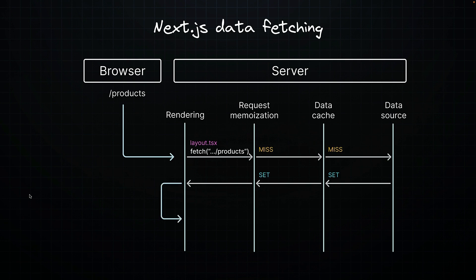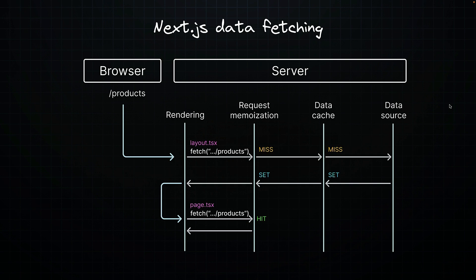When the layout renders, it proceeds to render the page component nested inside. Keep in mind, we are still in the same render phase — this is not a new page reload. The page component initiates a fetch request. Since the URL and options are the same as the one already in memory, the result of that request is returned to the page component. There's no need to check the data cache or make an additional request to the data source, improving overall performance. This is request memoization — we're using the results of requests within the same render phase.